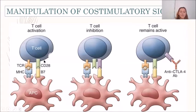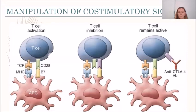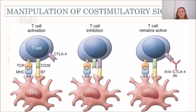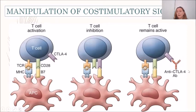Normally in T cell activation, the second signal is mediated by the interaction of CD28 with B7 family molecules, which activates the cell. Later, in the normal immune response, the T cell expresses CTLA-4, which has higher affinity for the B7 molecule family and interacts with it with a potent inhibitory effect, causing the T cell to be inhibited and the immune response to finish. The monoclonal antibody used in cancer treatment blocks CTLA-4, obtaining a T cell that remains active.